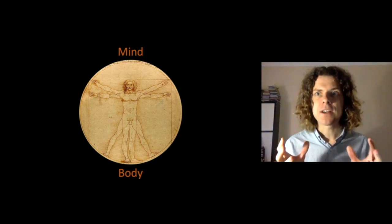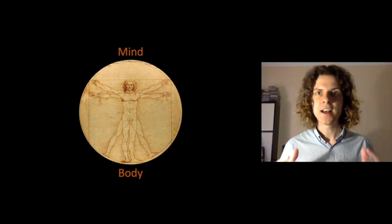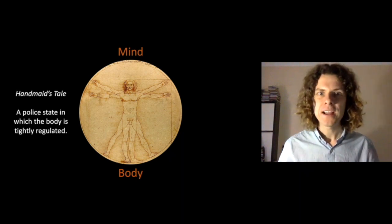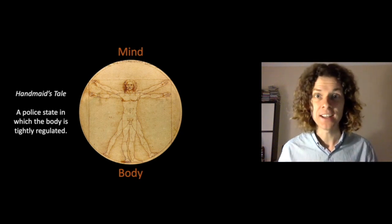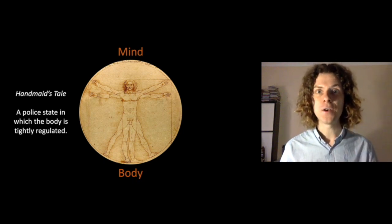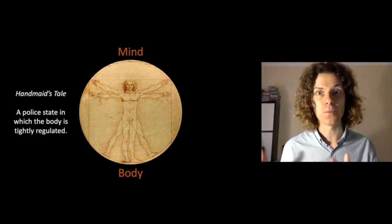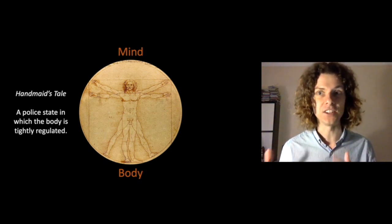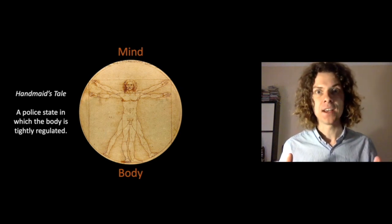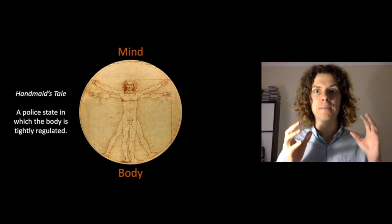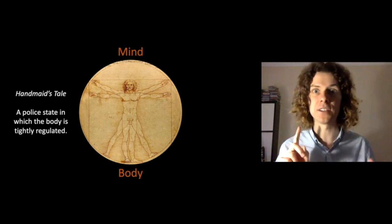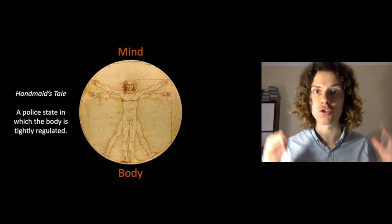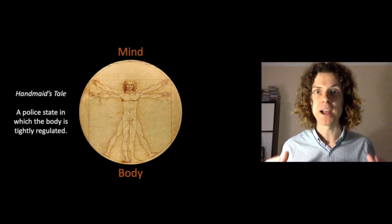If we think about body and mind, we can see that in these two novels the oppression occurs in a slightly different way. In The Handmaid's Tale, roughly speaking, there's a police state in which the body is tightly regulated. The main character, Offred, is a handmaid who is made to have sex with one of the rulers of the repressive society of Gilead, because due to an ecological catastrophe there's been a collapse in male fertility. The handmaids like Offred are dehumanised — they have their name taken away, they're made to wear certain clothes, live in certain places, and act in certain ways.